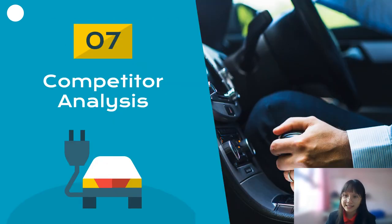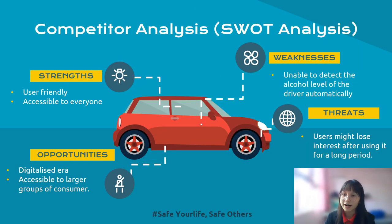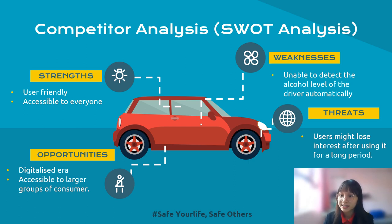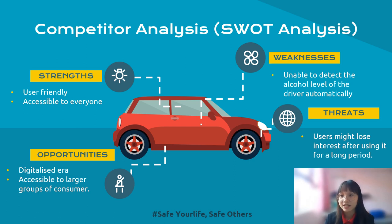Moving on to the competitor analysis, we will discuss based on the SWOT analysis. The strengths of our project are: firstly, it is user-friendly. The design of the mobile app is very simple and easy to use as presented in the GUI shown in the video. It is accessible to everyone as it can be installed for free. The weakness of the project is that the Safe Drive application cannot detect the alcohol level of the driver automatically because there are no built-in sensors in the car. There are also some opportunities for our project. In this era, everything is going digital and people like to follow trends.